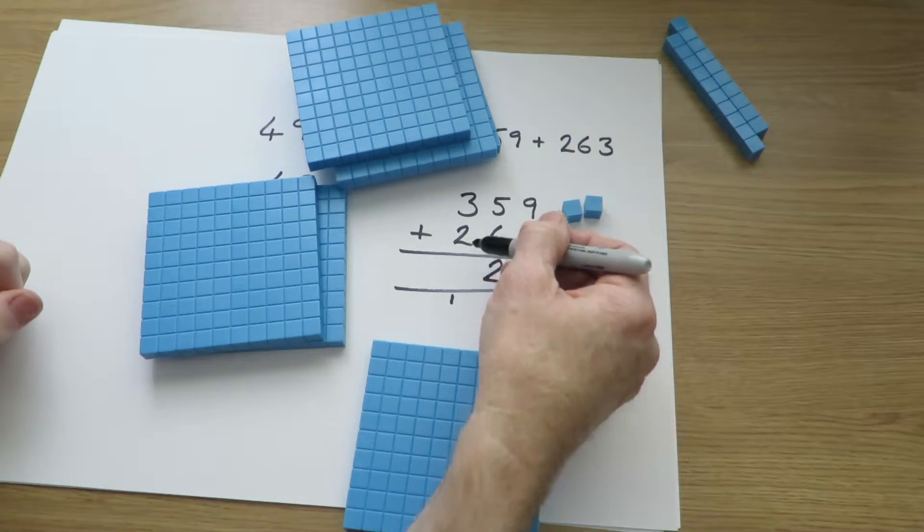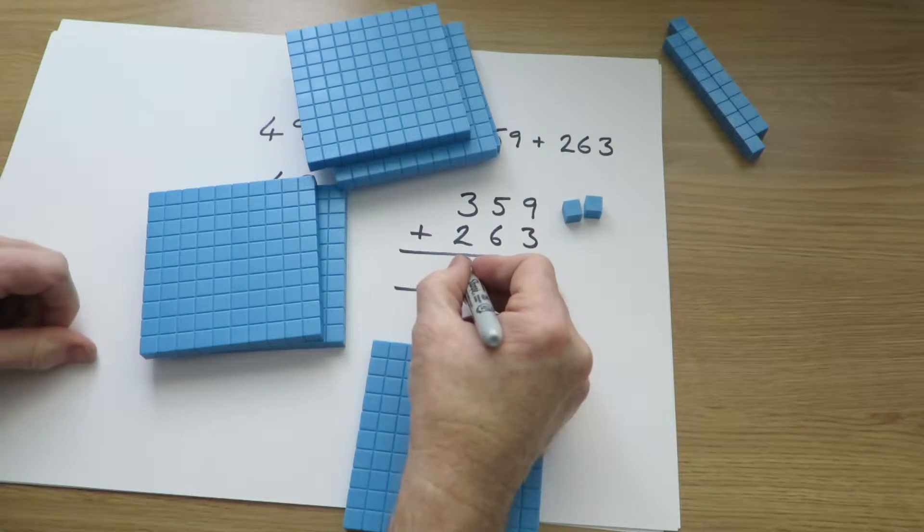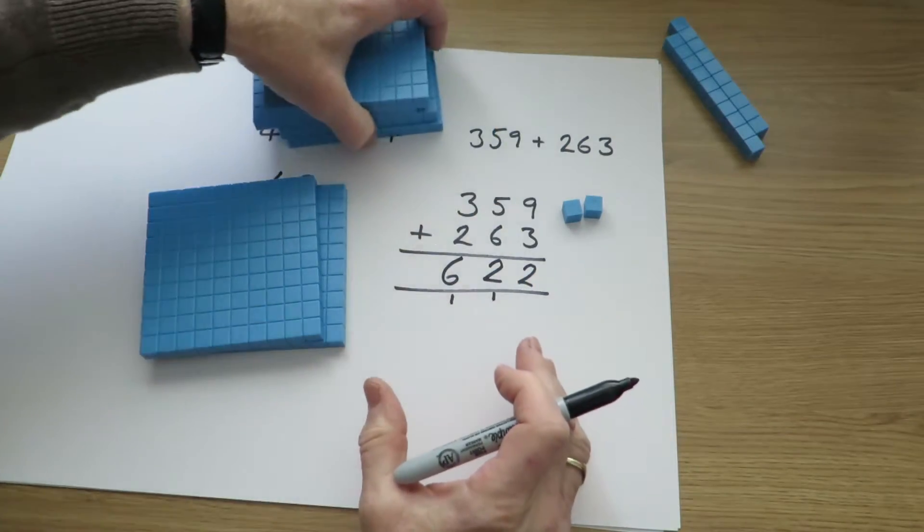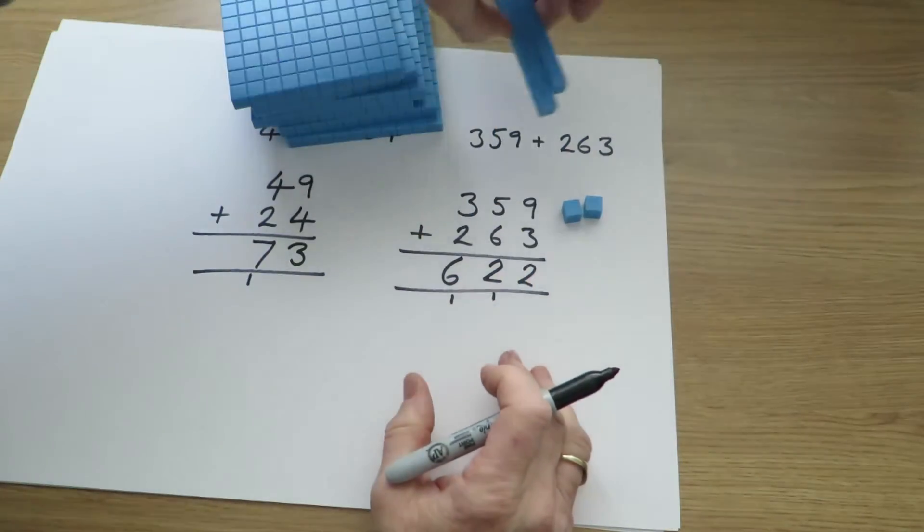So now we've got 300, 200 and 100, we've got 600. And the final answer can be shown is 622.